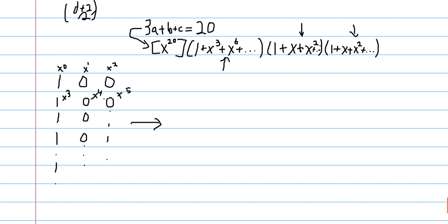So now, what happens when we multiply by (1 plus x plus x squared plus ...)? Well, we know we'll have a 1, and then our partial sum at this position is 1 plus 0, which is 1. Our next partial sum is 1 plus 0 plus 0, which is 1. Then we have another 1. So this will be a 2, and this will be a 2, and this will be a 2. The pattern is very obvious, and very true — there's no hidden Fibonacci.